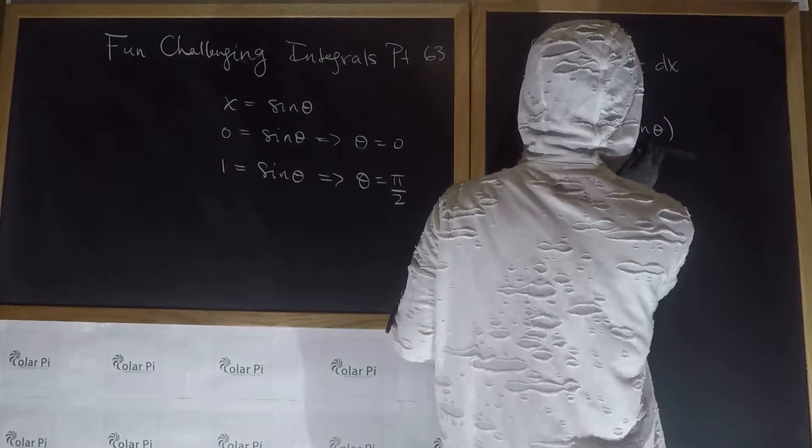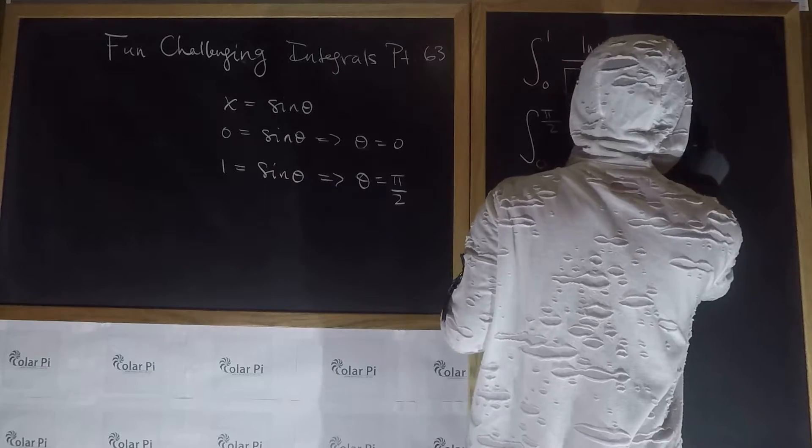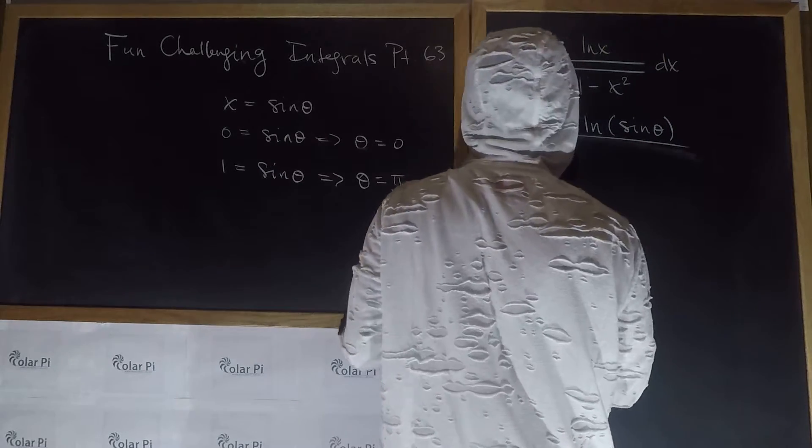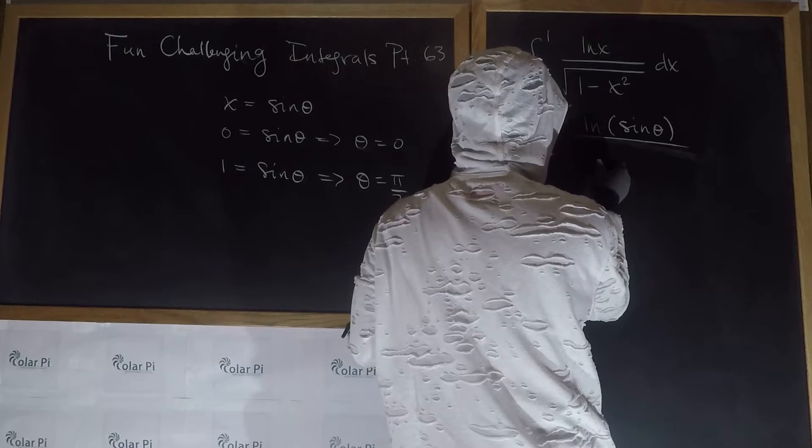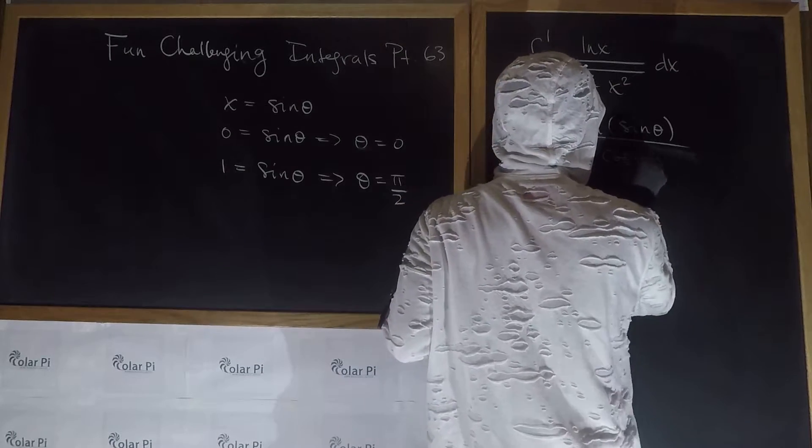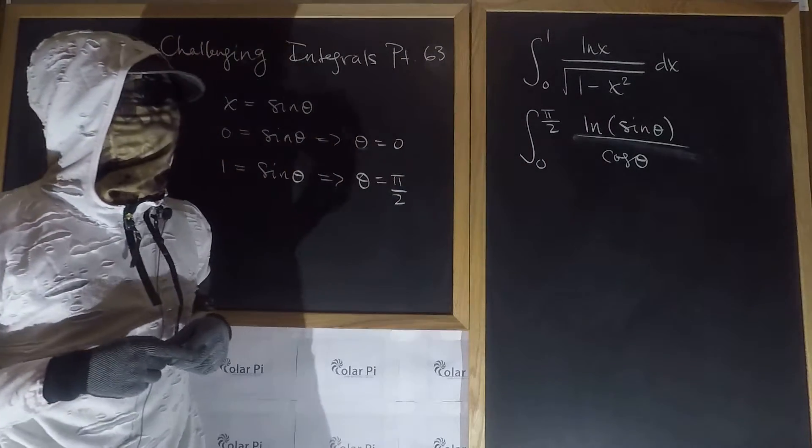So, this is slanted. But what I'm saying is, with the substitution that x be sine theta, the square root of one minus x squared is going to become simply cosine theta. Okay, cool.